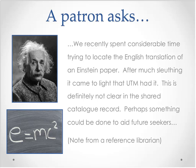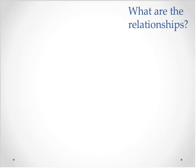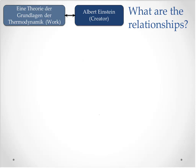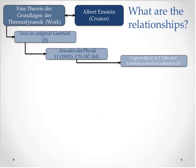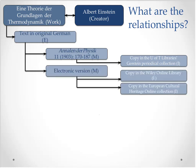Even though we had several copies of the paper in our collection in different manifestations, they were not easily identifiable and not linked in a way that would have facilitated discovery access to our user. To see what kind of relationships would have helped, we mapped the Einstein paper in FRBR. Einstein wrote an important paper on thermodynamics in German, which was published in Annalen der Physik in 1903, issue 11, and we have a copy in our Gerstein library periodical collection — the biggest science library in Canada.